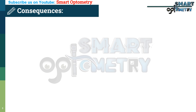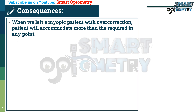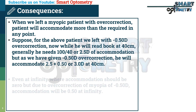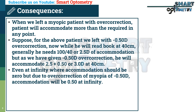Now let's see what are the consequences if we leave the patient with over-correction during refraction. When we leave a myopic patient with over-correction, the patient will accommodate more than required at any point. Suppose for the above patient, we leave a -0.5 diopter over-correction. While reading a book at 40 cm, he normally needs 100/40 or 2.5 diopters of accommodation, but with the -0.5 diopter over-correction, he will accommodate 2.5 + 0.5 or 3 diopters at 40 cm. Even at infinity, accommodation should be 0, but due to over-correction of -0.5 diopters, accommodation will be 0.5 diopters at infinity.